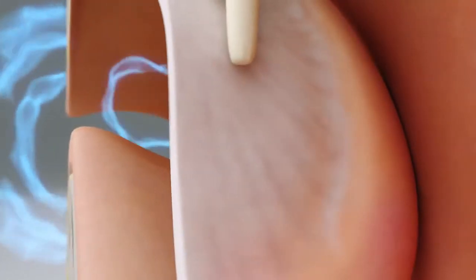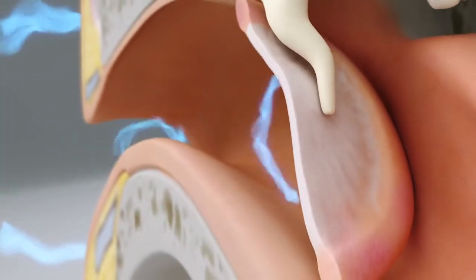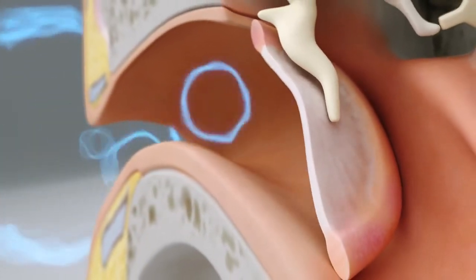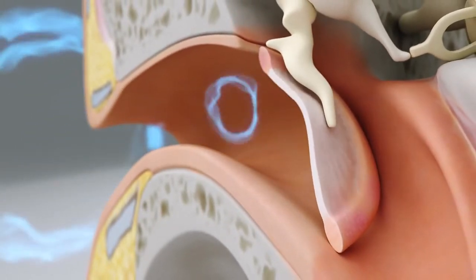The sound arrives at the eardrum, a flexible circular membrane which starts to vibrate when sound waves strike it. The sound waves are passed on by the movement of the eardrum to the middle ear.